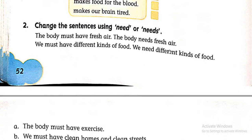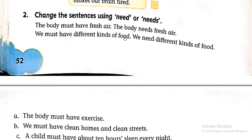Moving to question number two: change the sentences using 'need' or 'needs'. Let's see the examples. The body must have fresh air — becomes — the body needs fresh air. So in the place of 'must have', we have added 'needs'. The meaning of the sentence remains the same.